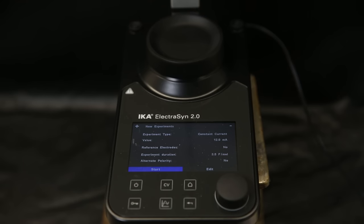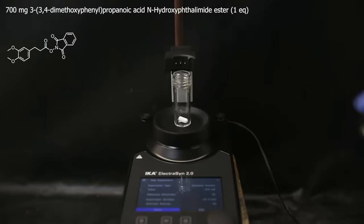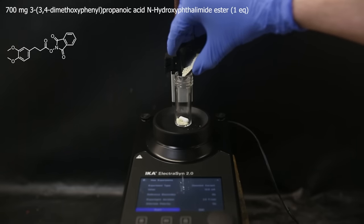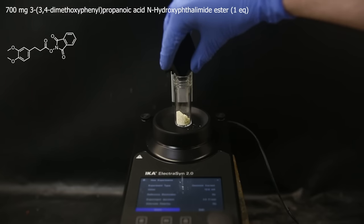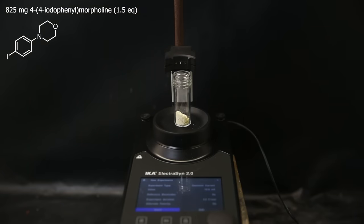So that was it, now it can be started. But first, I have to prepare the reaction mixture in the vial. So I set up the vial and the stir bar that comes with the device and add in 700 mg of the redox active ester I just made.